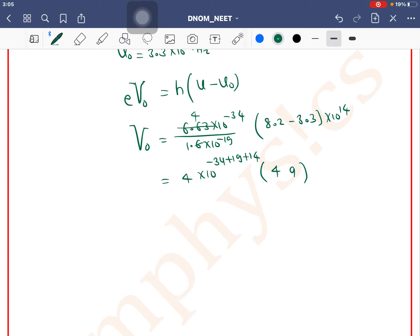as (6.63/1.6) × 10^(-34+19+14) × (8.2 - 3.3), which is approximately 4 × 10^-1 × 4.9.